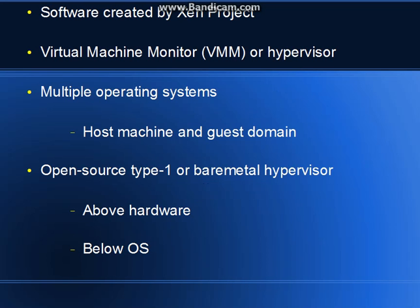Xen is an open source type 1 or a bare metal hypervisor. This means that Xen operates directly above the hardware layer but below any existing operating system that's on this machine.